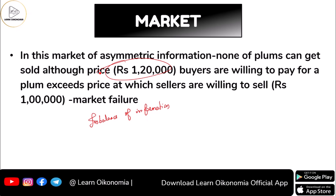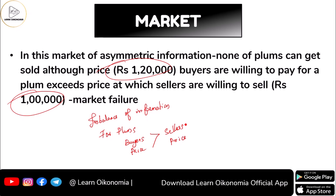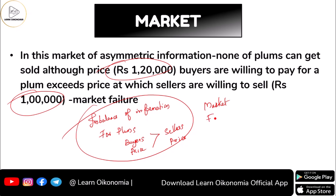None of the plums can get sold, even though buyers are willing to pay ₹1,20,000 and the buyer's price exceeds the seller's price for plums. Despite the potential for mutually beneficial trade, none of the plum cars exit the market. This is due to asymmetric information and the resultant market failure — the market fails to capture all information and reflect it in terms of price, making this a problematic situation in the used car market.